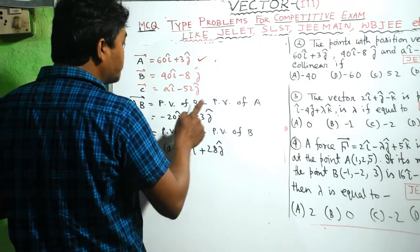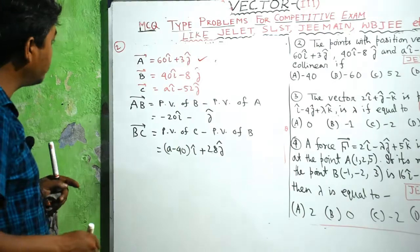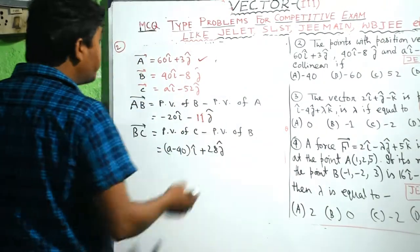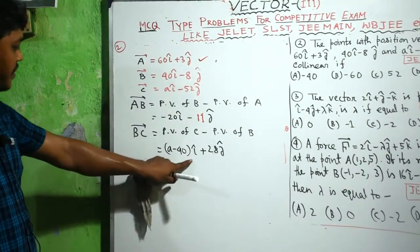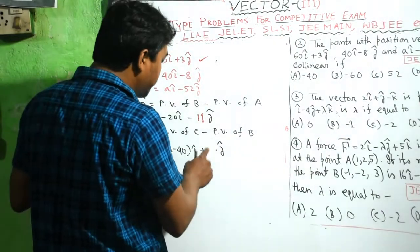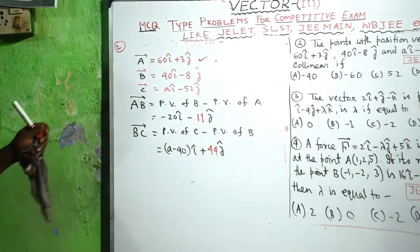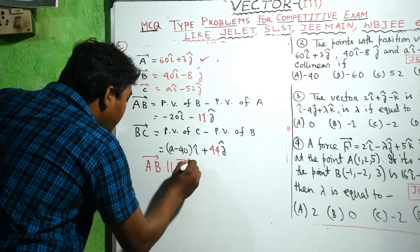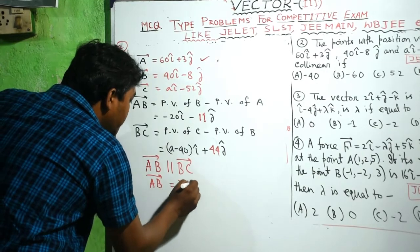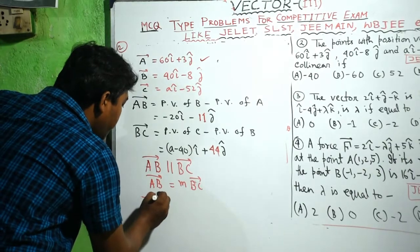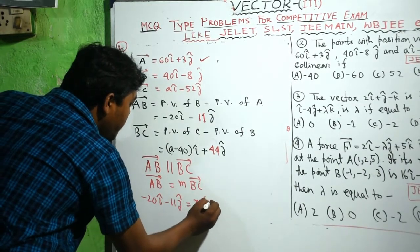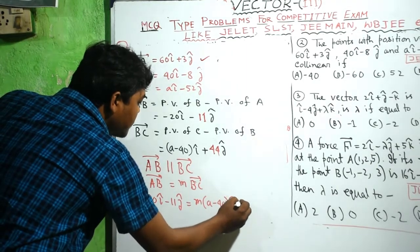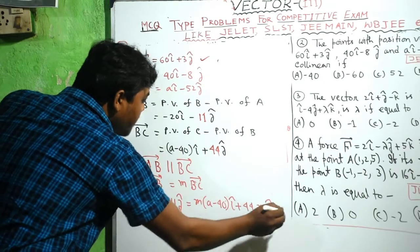Vector AB equals position vector of B minus position vector of A, which gives minus 20i cap minus 11j cap. Vector BC equals position vector of C minus position vector of B, that is (a minus 40)i cap plus 44j cap. According to the collinearity condition, AB is parallel to BC, so we can write AB vector equals m times BC vector: minus 20i minus 11j equals m times (a minus 40)i plus 44j.